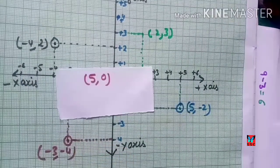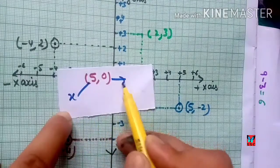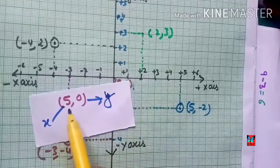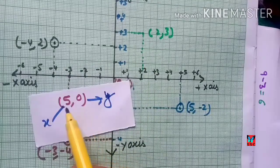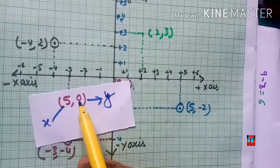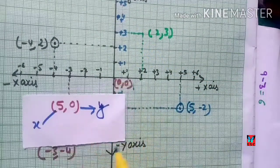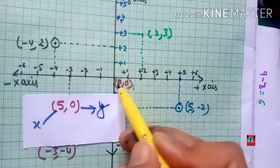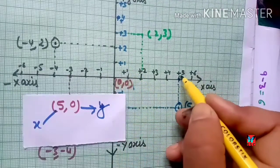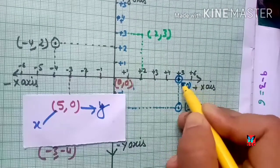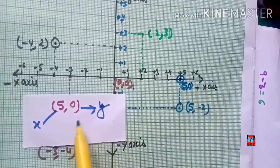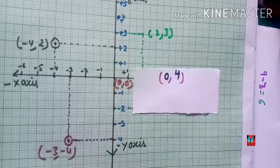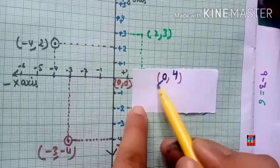Now let's plot the point (5, 0). Here x-coordinate is 5 and y-coordinate is 0. When one coordinate is 0, the point lies on an axis. Since y = 0, there is no movement along the y-axis, so we simply go to x = +5 on the x-axis. This point (5, 0) lies directly on the x-axis.